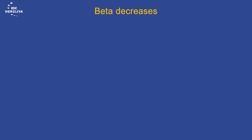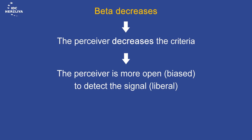As the beta decreases, the perceiver decreases her criterion. She is less severe, and more open to detect the signal. Thus, we will have more hit and false alarm responses.